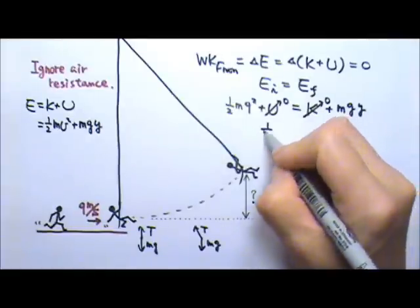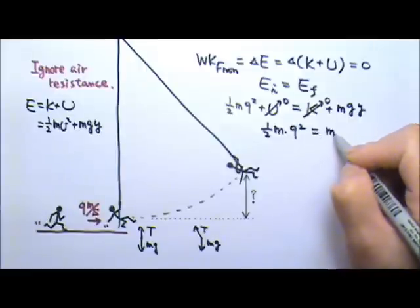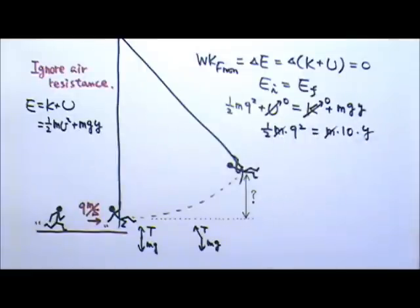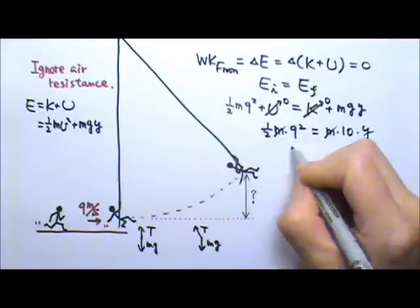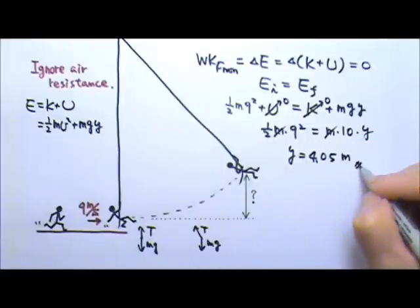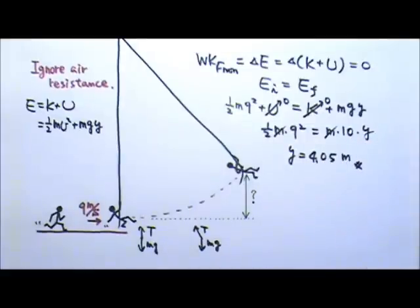So you have one-half m times nine squared equals to m times g times y, and the mass, yes, it cancels. And then we will be able to find the height to be 4.05 m. So that's the answer.